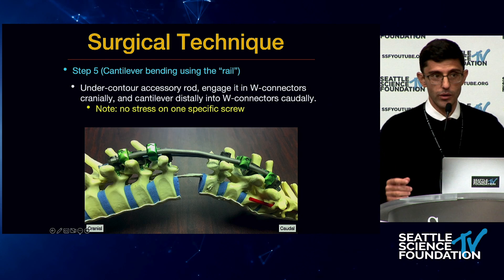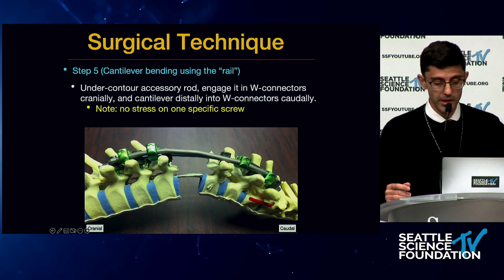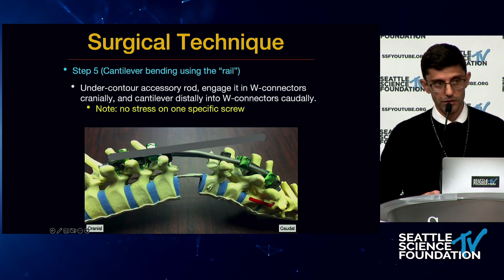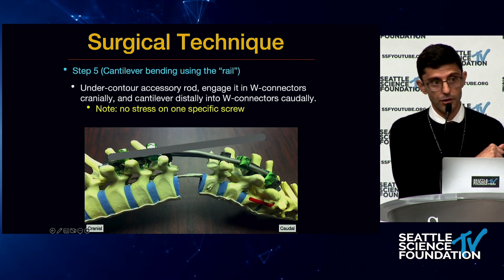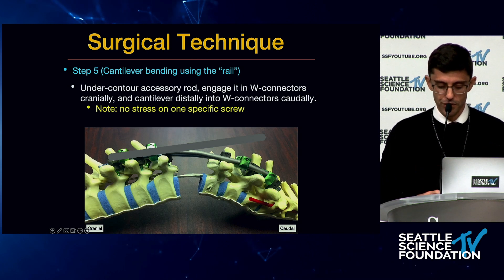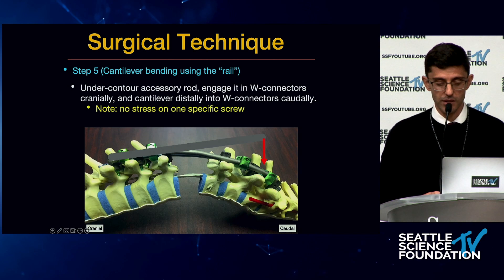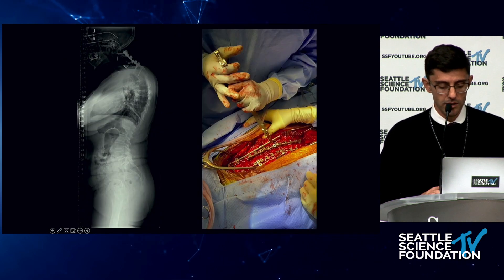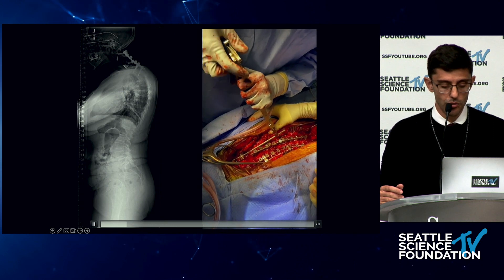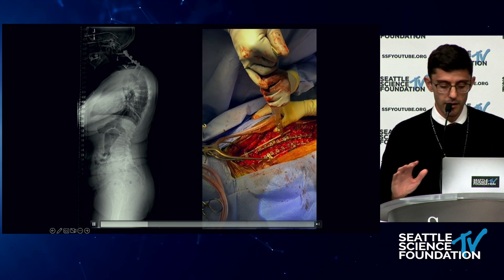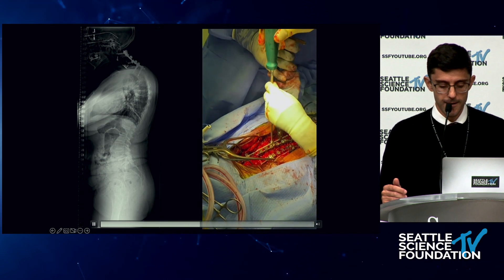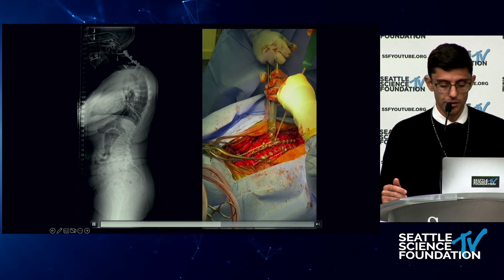The other way to correct kyphotic deformities is through cantilever bending. You secure the under-contoured rod — the rail — on one side, then push down, and that shortens through the three-column osteotomy site. In the same patient, you can see the under-contoured accessory rod being brought down into the W connectors and secured.